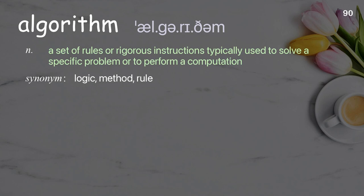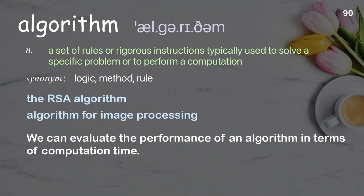Algorithm: A set of rules or rigorous instructions typically used to solve a specific problem or to perform a computation. Examples: The RSA algorithm, Algorithm for image processing. We can evaluate the performance of an algorithm in terms of computation time.